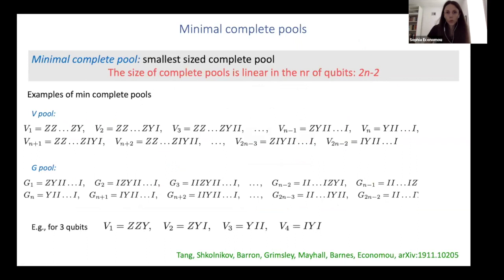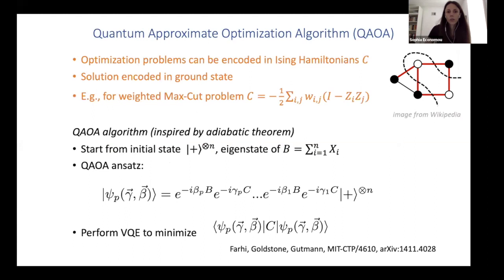So in the very last minute or so, I just want to show you how ADAPT does in the context of optimization. So there are certain well-known optimization problems such as the max cut problem, which can be mapped onto classical Ising Hamiltonians shown here. And the QAOA algorithm is an algorithm well known from 2014, where you start from a state like this and you apply in an alternating fashion, the problem Hamiltonian exponentiated and a mixer shown here, which is X rotations by the same angle on all the qubits.